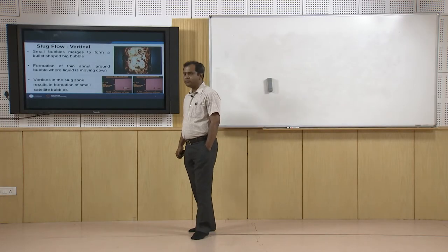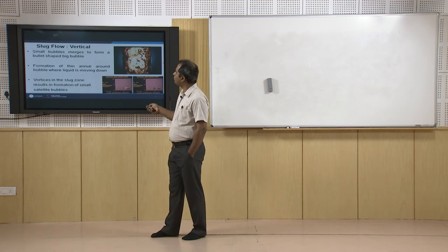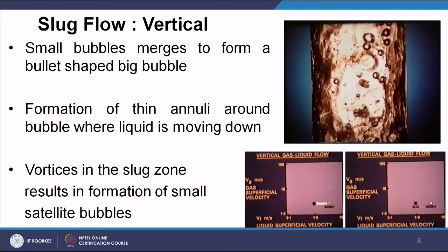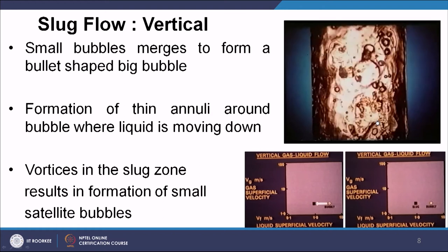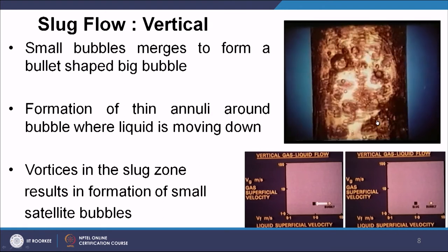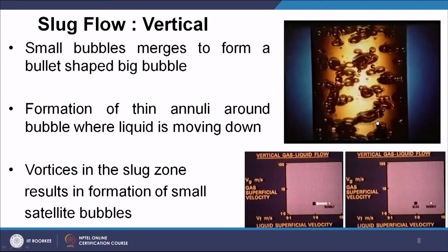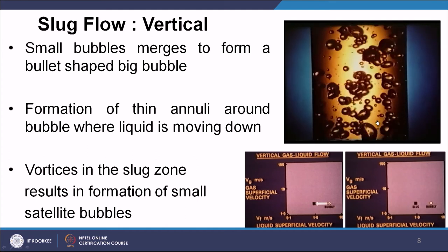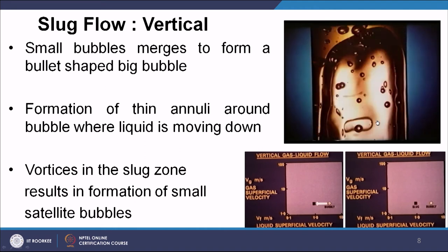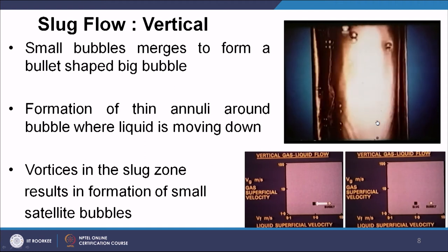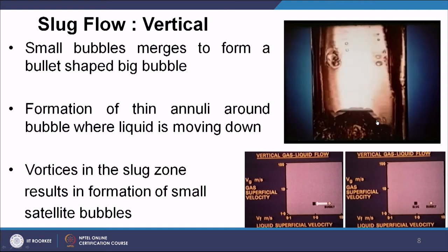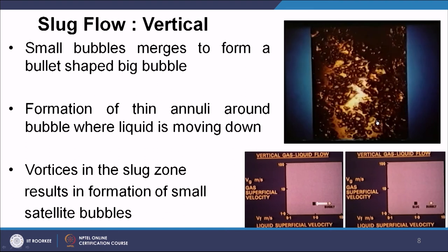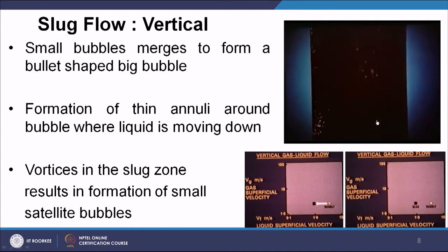The next flow regime in vertical configuration is slug flow. Here, small bubbly-flow bubbles merge and form a big bullet-shaped slug bubble. This slug bubble is followed by satellite bubbles formed due to vortices in the slug zone. Slug flow is obtained by reducing the liquid superficial velocity while keeping the gaseous superficial velocity the same — this transition from bubbly to slug flow can be seen in the flow regime map.